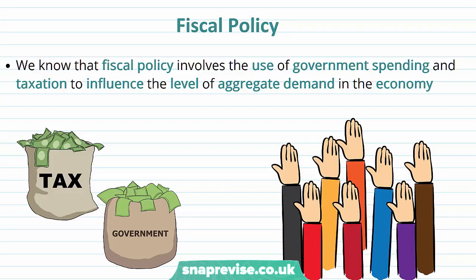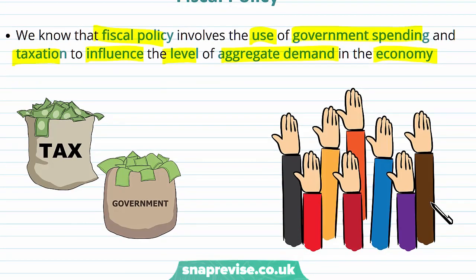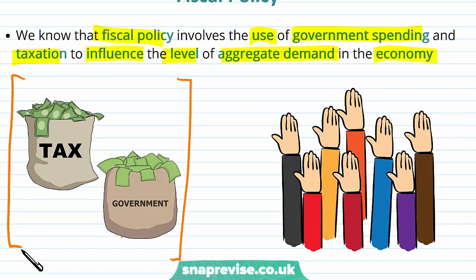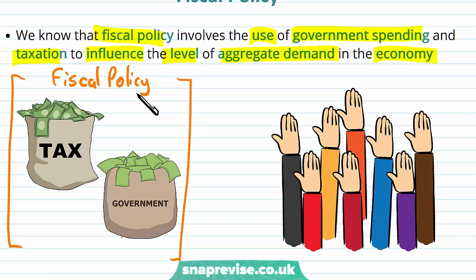Fiscal policy involves the use of government spending and taxation to influence the level of aggregate demand in the economy. There are two tools to fiscal policy: taxes — the government will tax people on their income, on their profits, etc. to build up a tax revenue — and the tax revenue funds the government spending. We can see how the two things interlink and are dependent on each other.